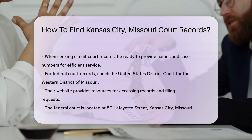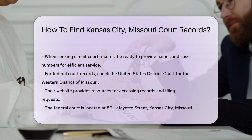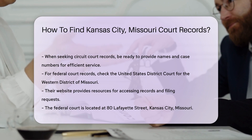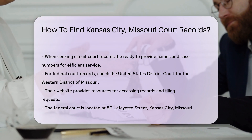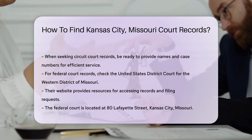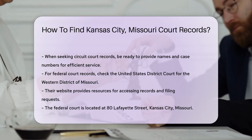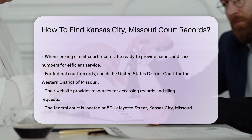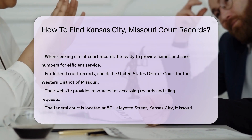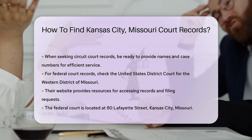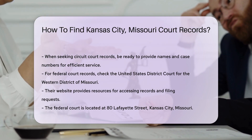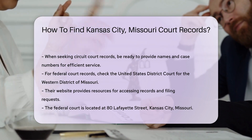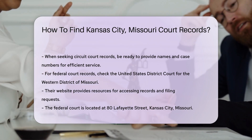For federal court records, you will want to check the United States District Court for the Western District of Missouri. Their website has resources for accessing records and filing requests. The court is located at 80 Lafayette Street, Kansas City, Missouri.